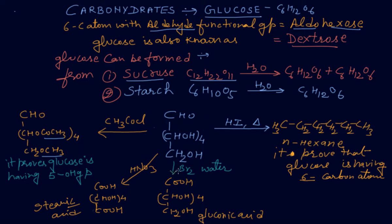When glucose is reacted with bromine water, we get gluconic acid — the aldehyde carbon atom is converted into the acidic part. With nitric acid, both ends are converted: both the aldehyde and alcohol groups are converted to acidic groups, giving saccharic acid. These reactions are very important and appear every year in exams — to prove six carbon atoms, to prove the carbonyl group, and to prove five OH groups.